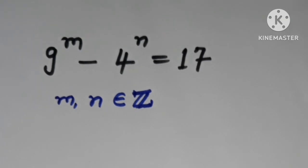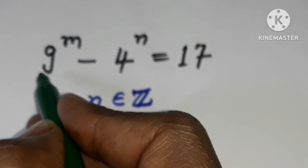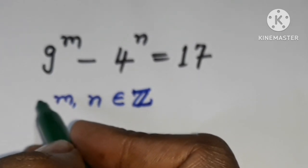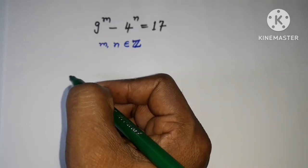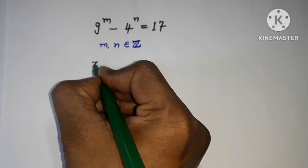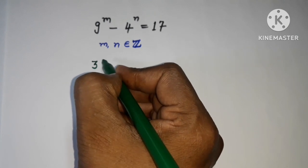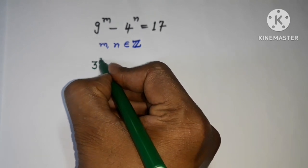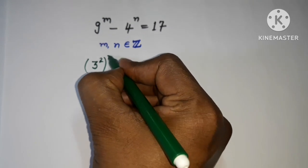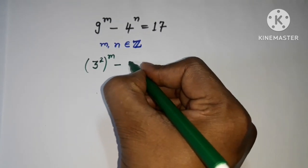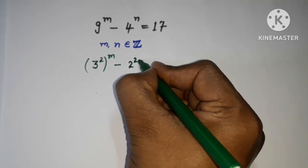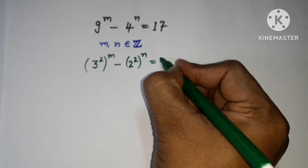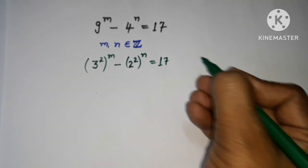This can be rewritten as: 9 is a square of 3 and 4 is a square of 2. So this can be written as 3 squared to the power m, and 4 can be written as 2 squared to the power n, and it equals 17.